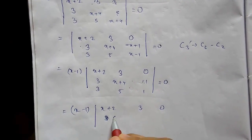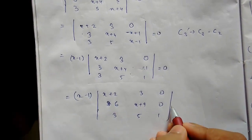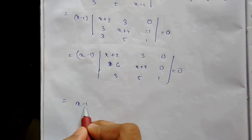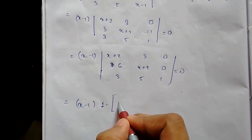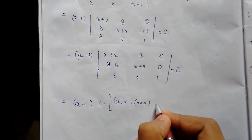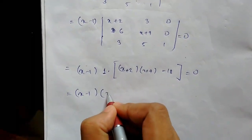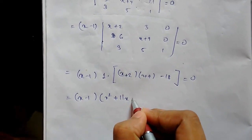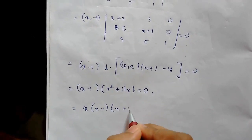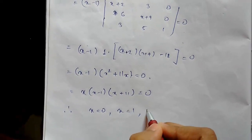After row operations, row 2 becomes 6, x+9, 0. Expanding the determinant, we get (x minus 1) times (x+2)(x+9) minus 18 = 0, which gives (x minus 1)(x² + 11x) = 0. Factoring out x: x(x minus 1)(x + 11) = 0. Therefore x = 0, or x = 1, or x = −11 are the three possible values.